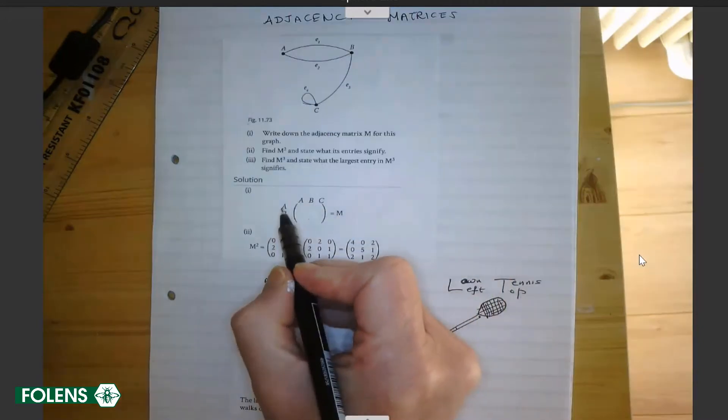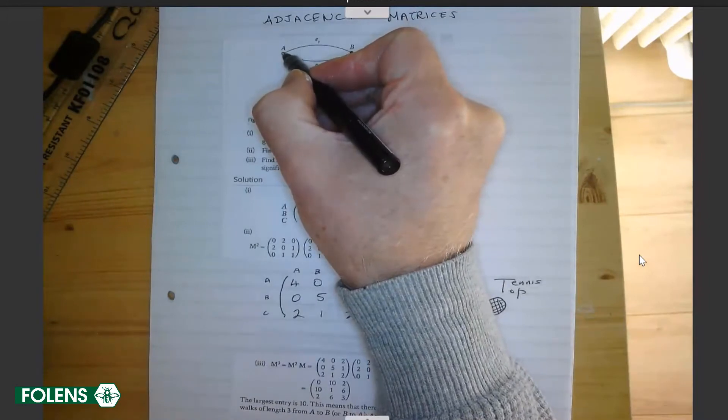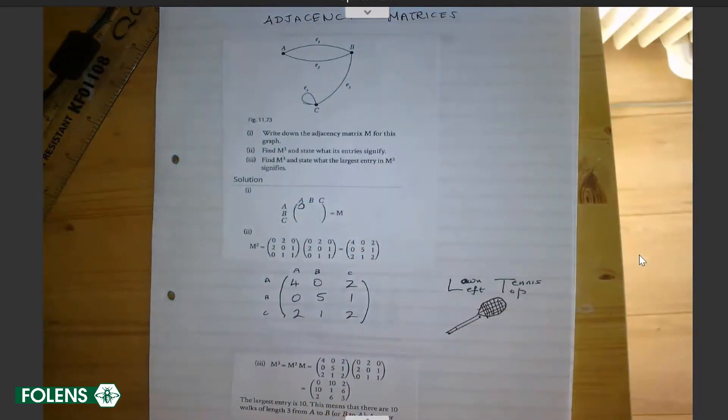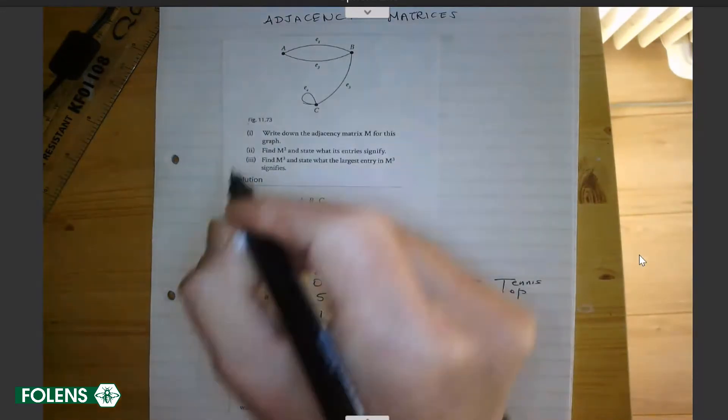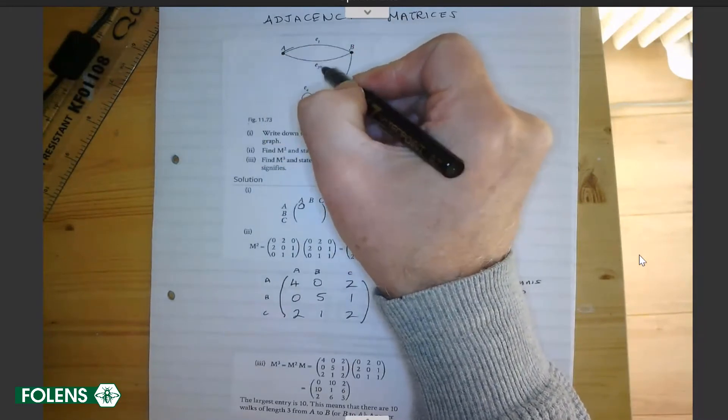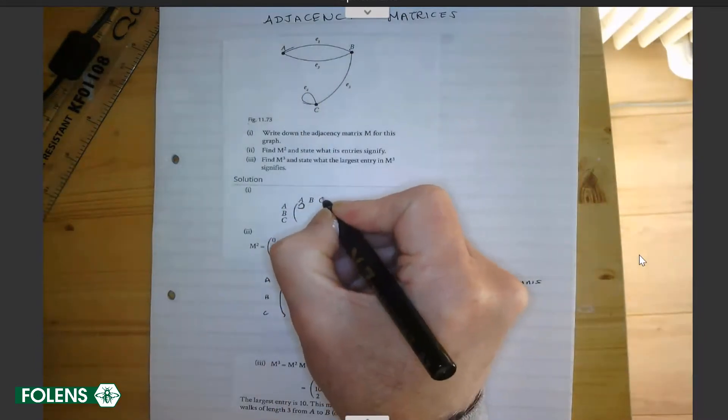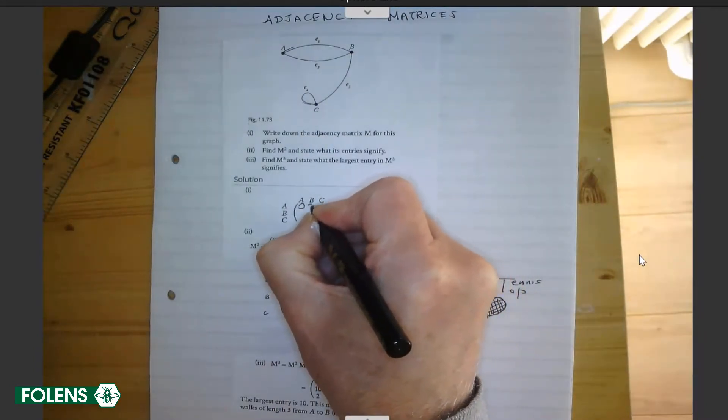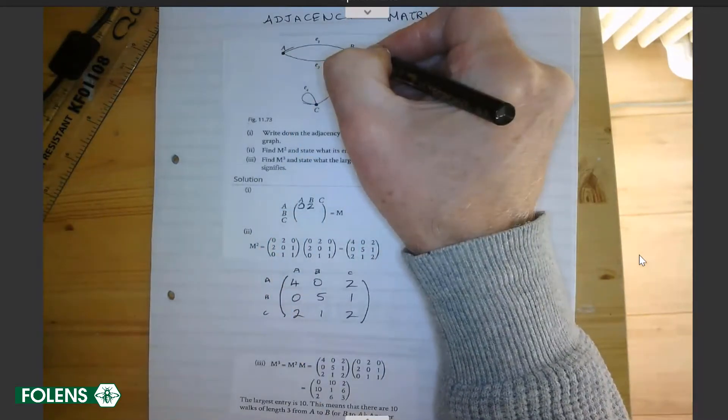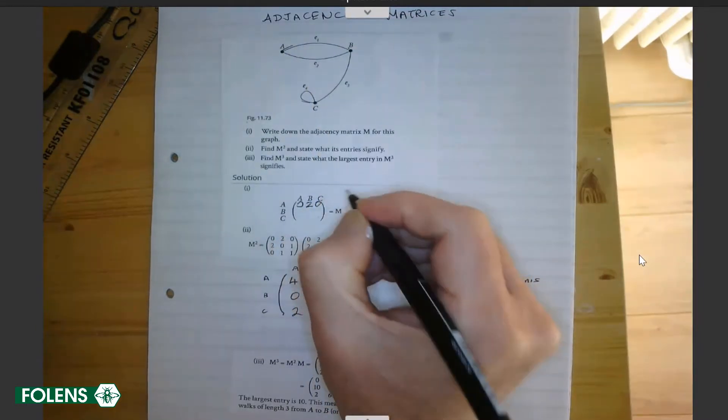How many ways are there of going from A to A? Well, there is no way of going from A to A straight away. There's no loop going from A to A, so there are zero ways. How many ways are there of going from A to B? We can go along E1 or E2, so there are two different routes. From A to C, there are no routes leading directly, so that's a zero.